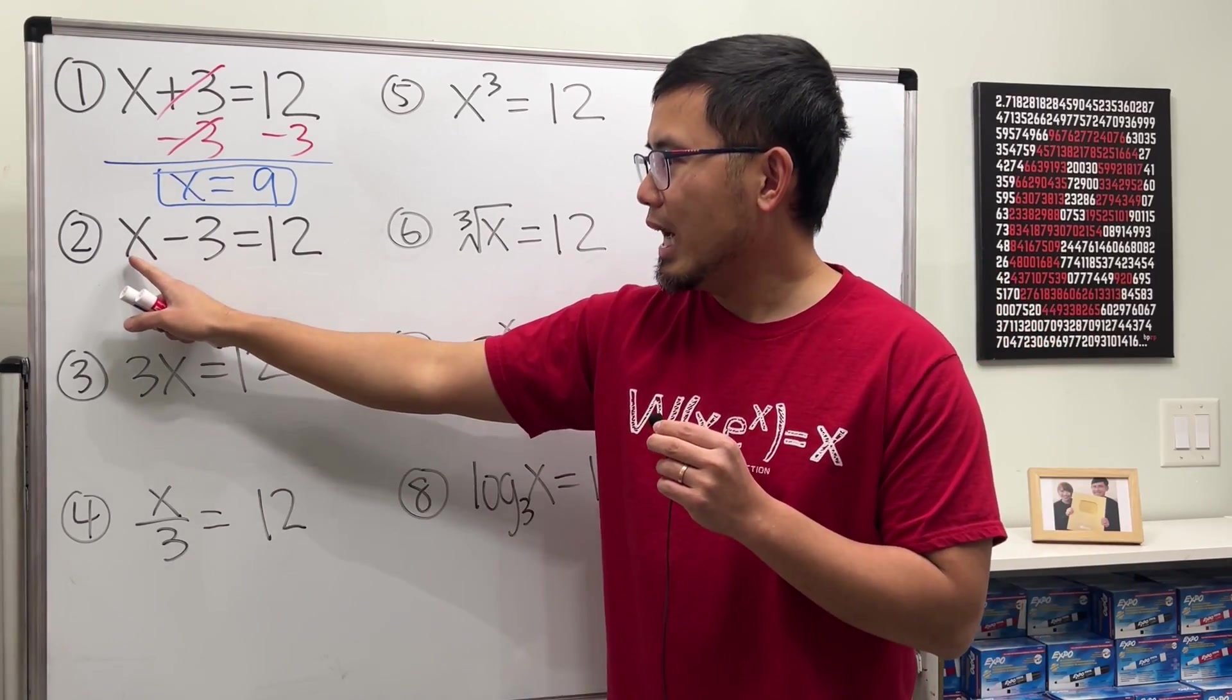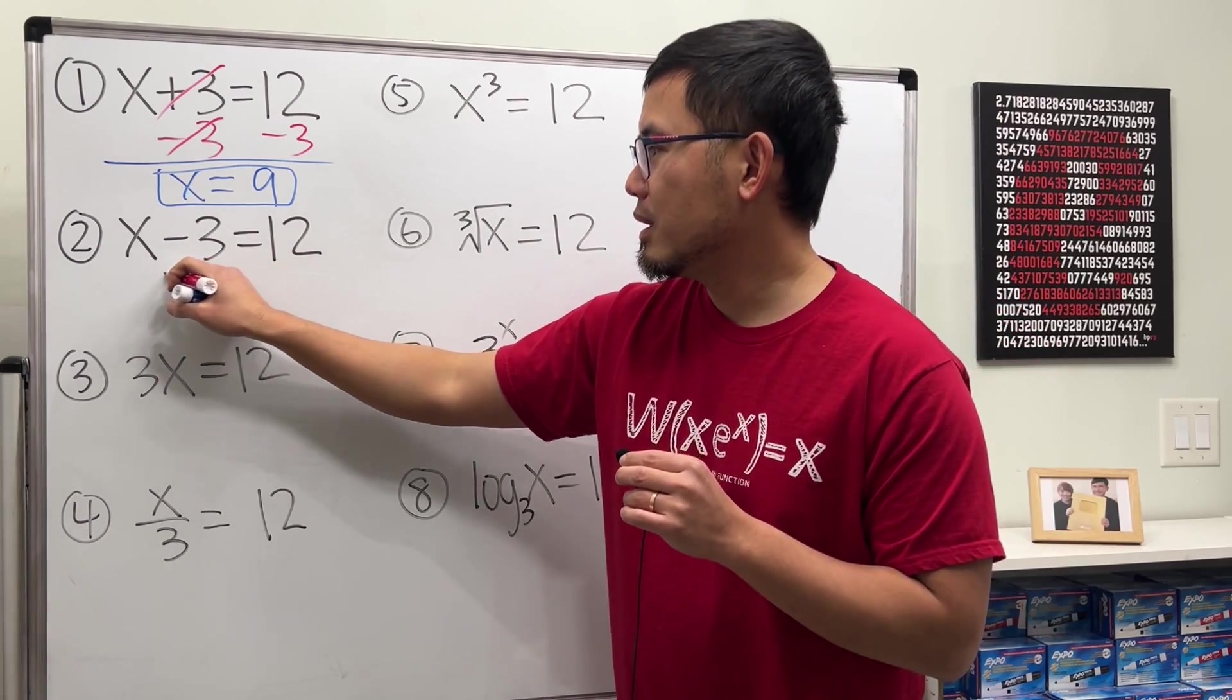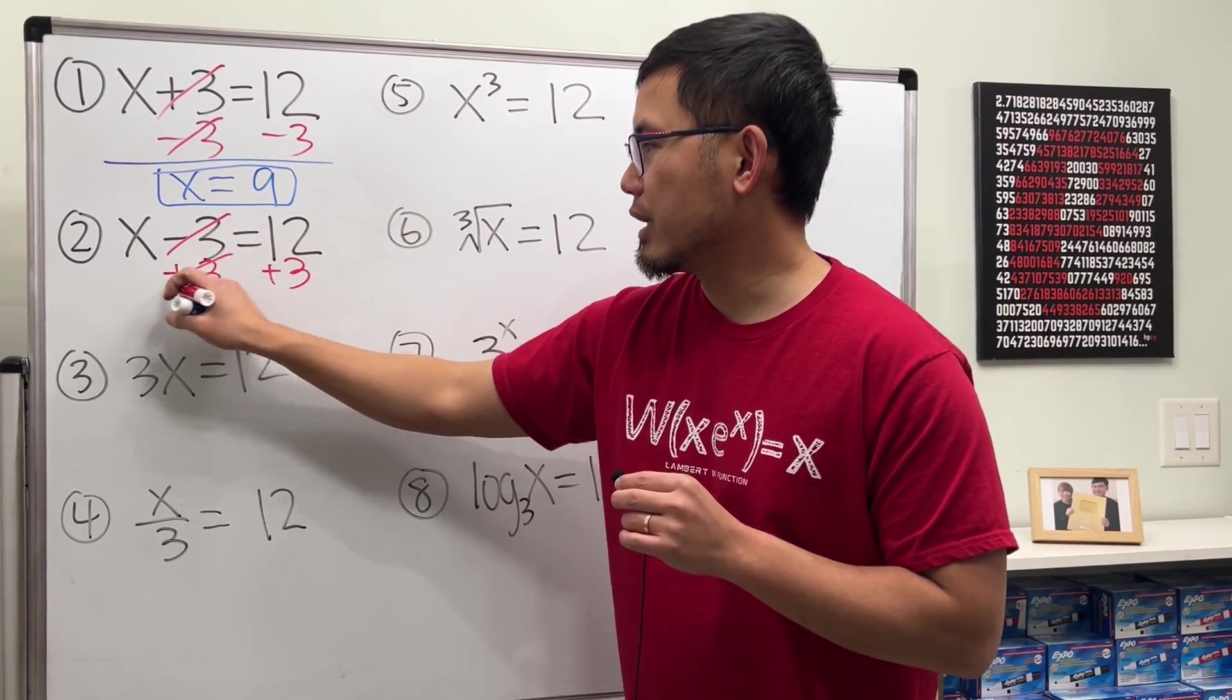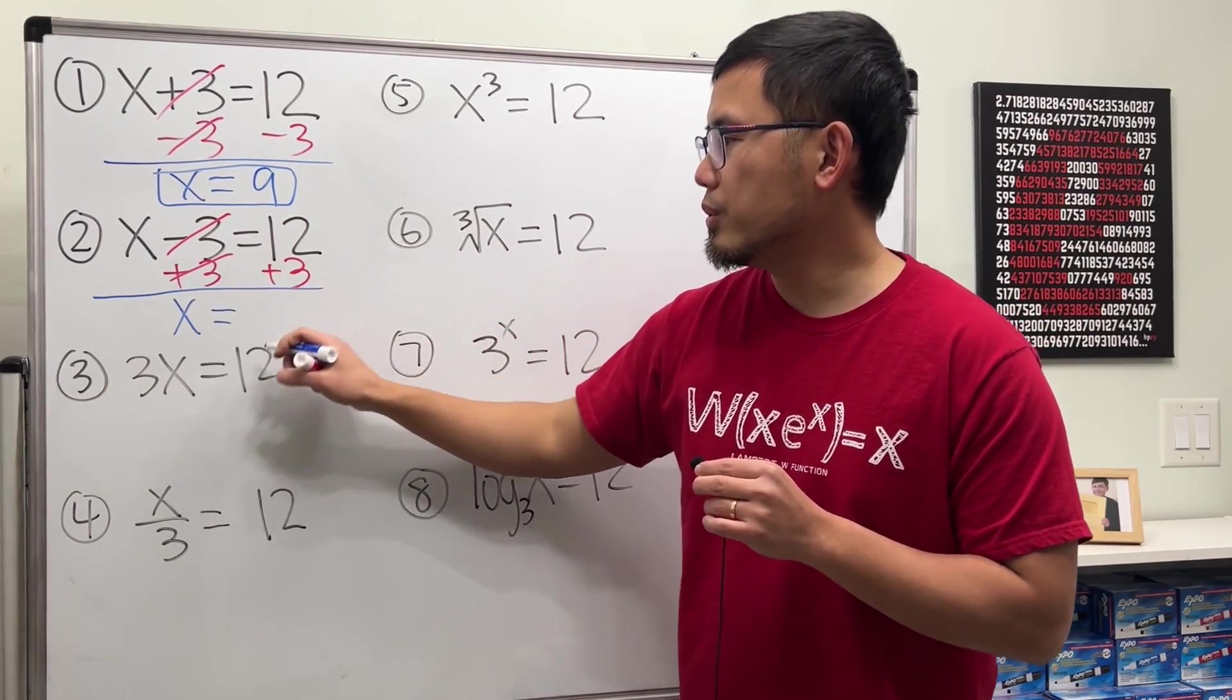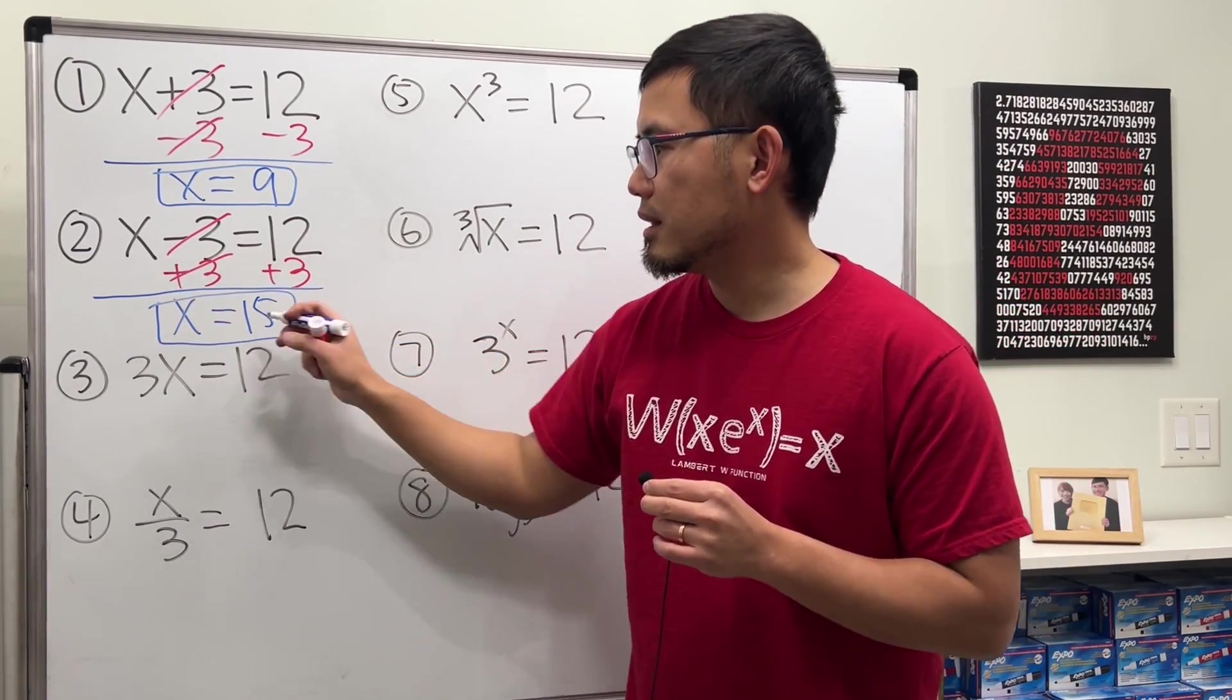Next, if we have x minus 3 equals 12, the opposite of that will be plus. You just add 3 on both sides. So they cancel, and here we will get x, and that's equal to 12 plus 3, which is 15. Done as well.